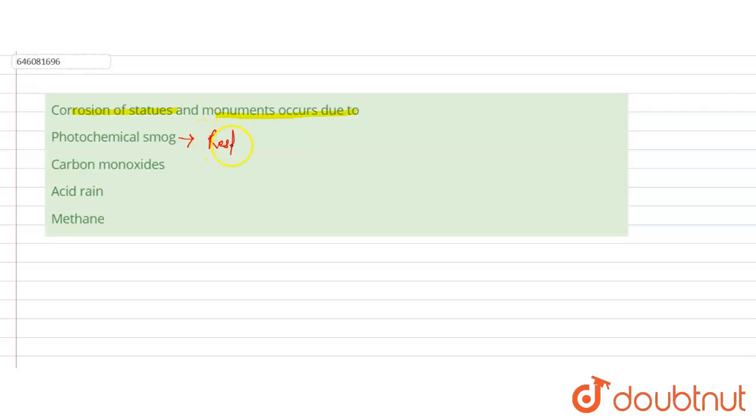Photochemical smog causes respiratory illness like asthma. The next is carbon monoxide.